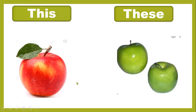For one item, use 'this.' For example, there is one apple — that is singular — so you say 'This is.' If you have plural, like two apples, use 'These are.' So remember: 'this is' for singular, 'these are' for plural.